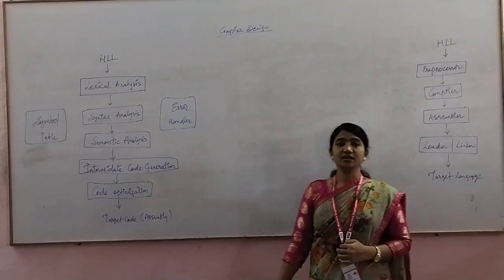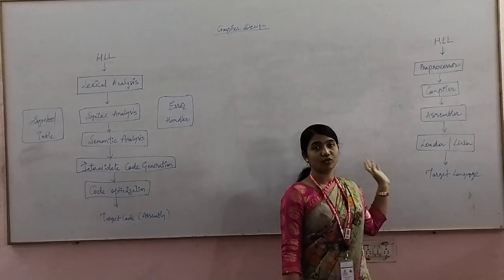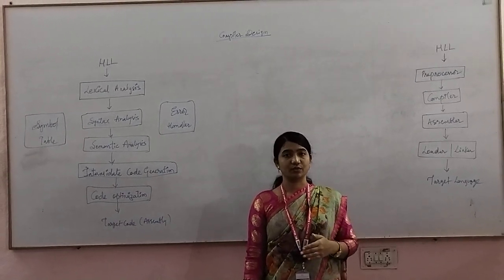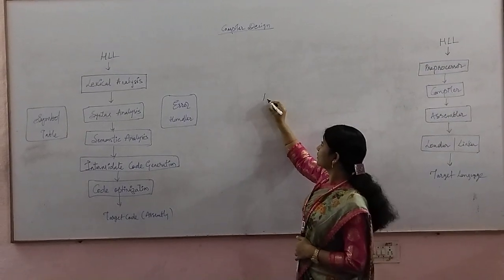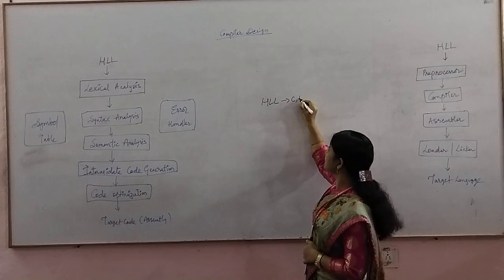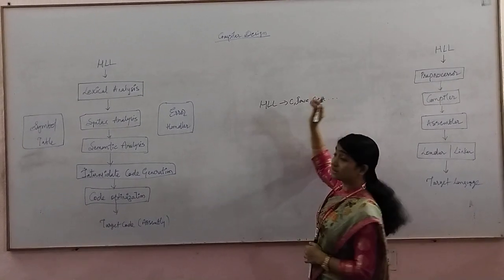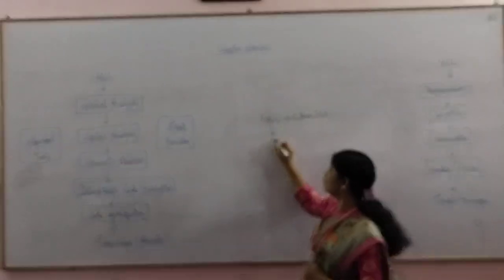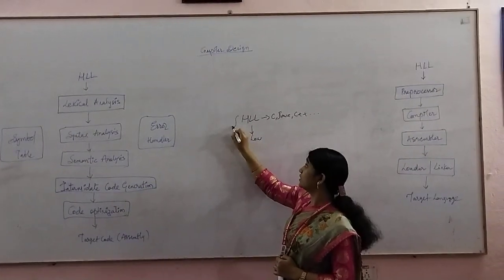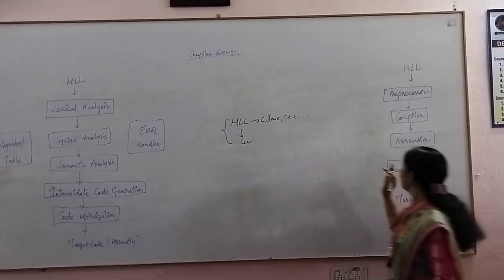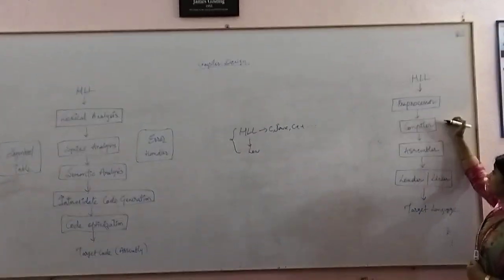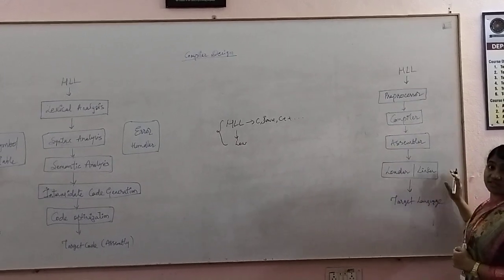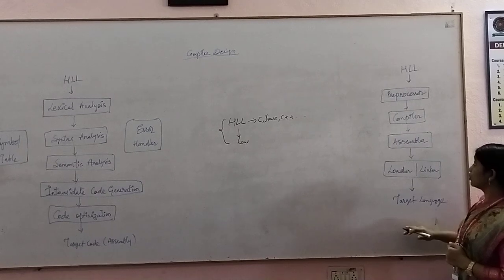When we are talking about compiler design, what is a compiler? A compiler is nothing but a software which converts your high level language into a low level language. Whatever the code you write in high level language — C, Java, C++, the user understandable language — it gets converted into low level language. We have different software modules: preprocessor, compiler, assembler, linker, and loader, that will convert into target language.